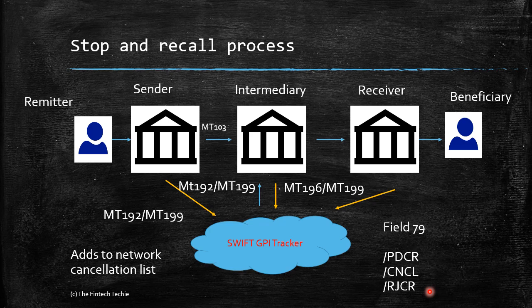Once an MT196 has been honored, it goes to the Swift GPI tracker, which relays it back to the sender. The GPI tracker also has a feature of sending regular MT199 notifications to inform the sender of the status of the stop and recall. This completes the full cycle. If successful, the intermediary will make arrangements to send the funds back to the sender.